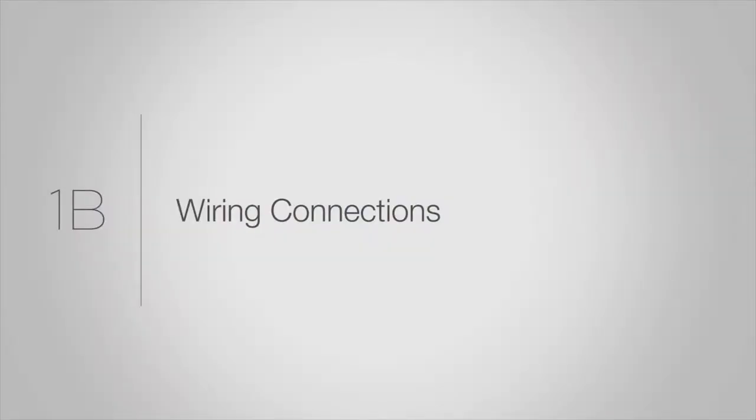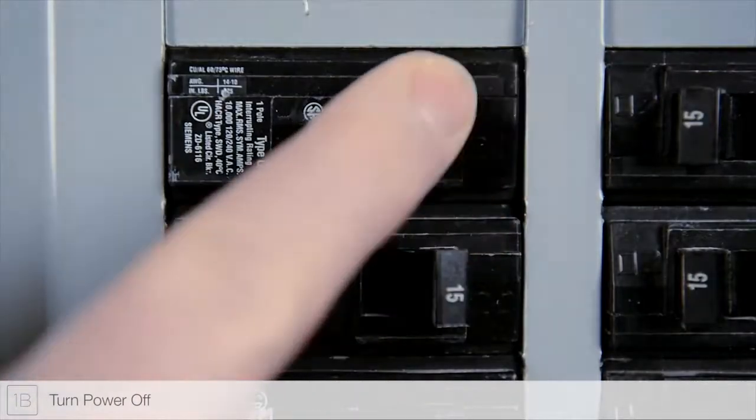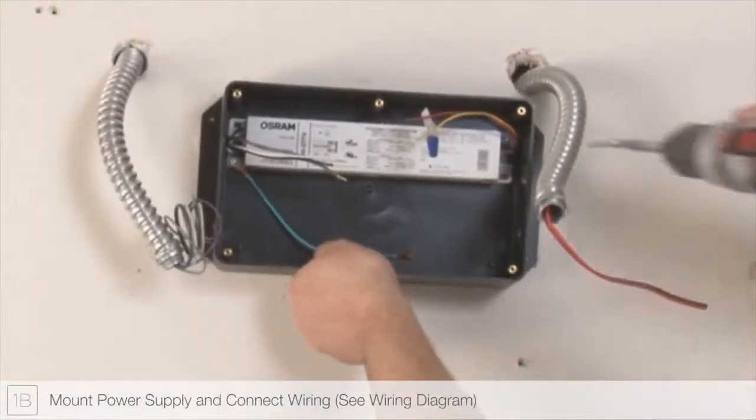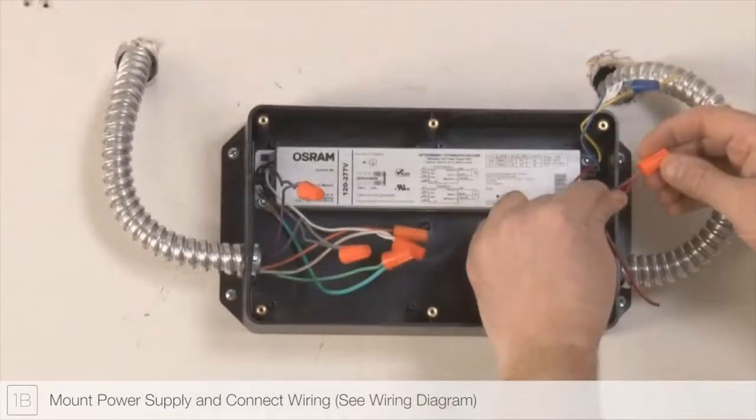Step 1B. Before doing any electrical wiring, always ensure the power is turned off at the breaker panel. Mount the remote power supply in an accessible area nearby.